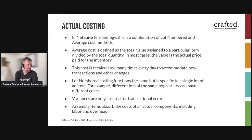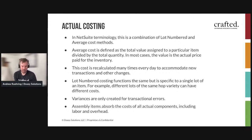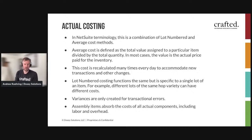Variances do exist with average costing, but they're really only for transactional errors — for example, transactions dated inappropriately or a production order not finished correctly. That can create conditions where NetSuite doesn't know where to put the dollars and writes them to a variance account. You still have to be on top of these, but if you're entering transactions correctly, you don't really see them. They also help highlight when something needs to be corrected.